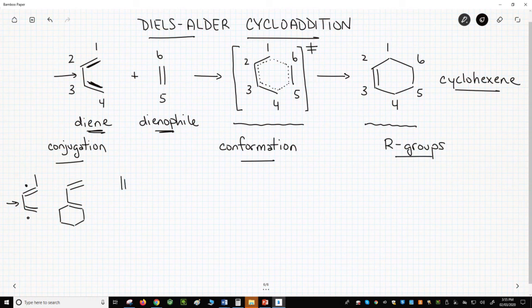This is a diene, but it's not a conjugated diene. The two pi bonds are separated by two single bonds, not just one. This last diene would not be able to undergo a Diels-Alder reaction. It's a diene, but it's not a conjugated diene.